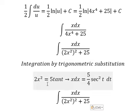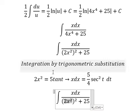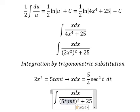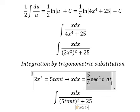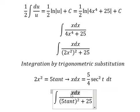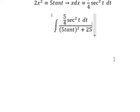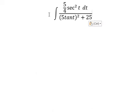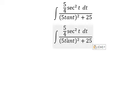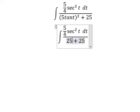Now we substitute: we change x for this expression, and we change dx for this expression. So in the integral we now have 25 times tan squared(t).